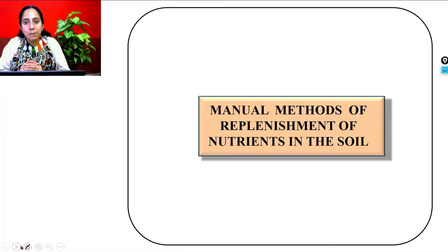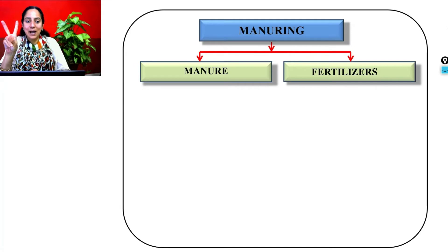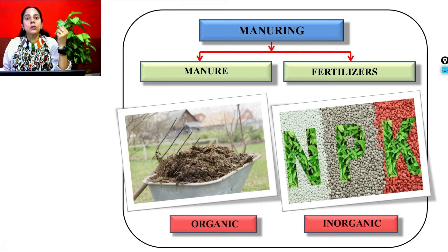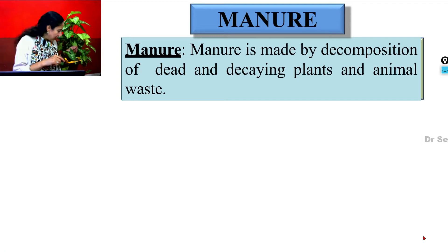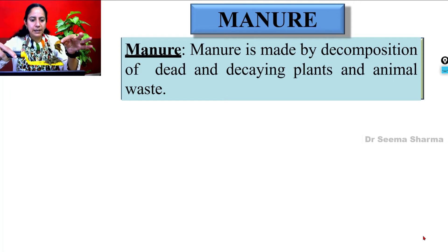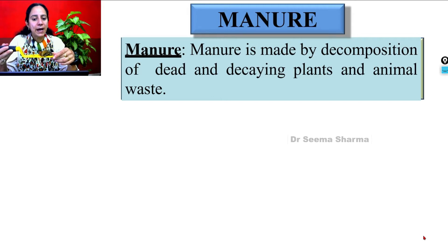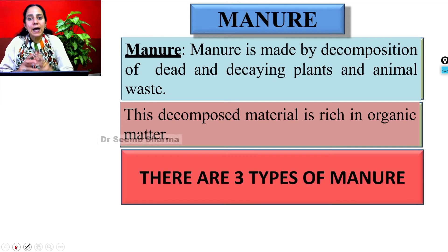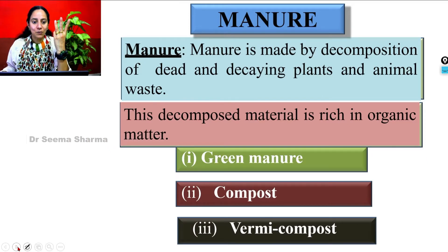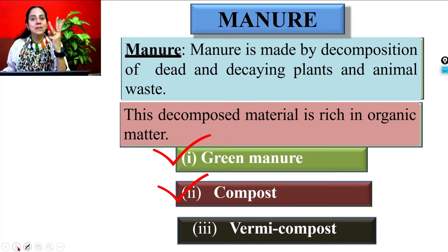Now we come to manual methods of replenishing nutrients. The farmer has two options: manure and fertilizer. Manures are of organic origin; fertilizers are of inorganic origin. Manure is made from the decomposition of dead and decaying plants and animal waste, so this decomposed material is rich in organic matter. We have three types of manure when manually adding supplements to increase soil fertility: green manure, compost, and vermicompost.